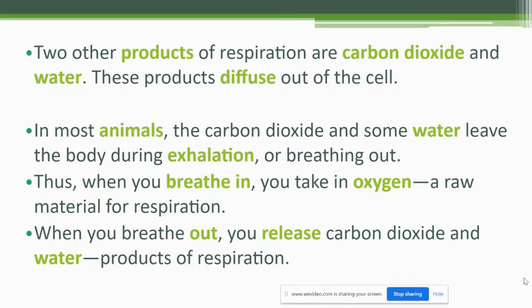Besides energy, two other products of respiration are carbon dioxide and water. These products diffuse out of the cell, moving from higher concentration to lower concentration. In most animals, the carbon dioxide and water leave the body during exhalation — breathing out. When you breathe in, you take in oxygen, which is the raw material for respiration. When you breathe out, you release carbon dioxide and water, which are the products of respiration. Photosynthesis needs carbon dioxide and water to start, whereas respiration produces them — so you can see how that cycle works.